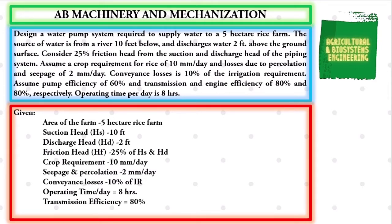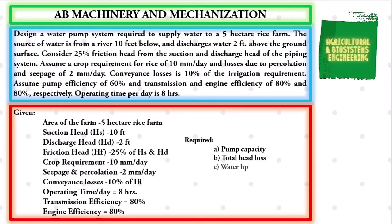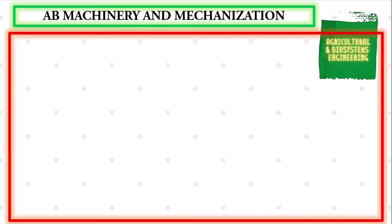The transmission efficiency is 80%, and the engine efficiency is 80%. The required values in the problem are: the pump capacity, the total head loss, the water horsepower, the brake horsepower, and the motor horsepower or engine horsepower. After identifying the given and the required in the problem, we proceed with our solution.